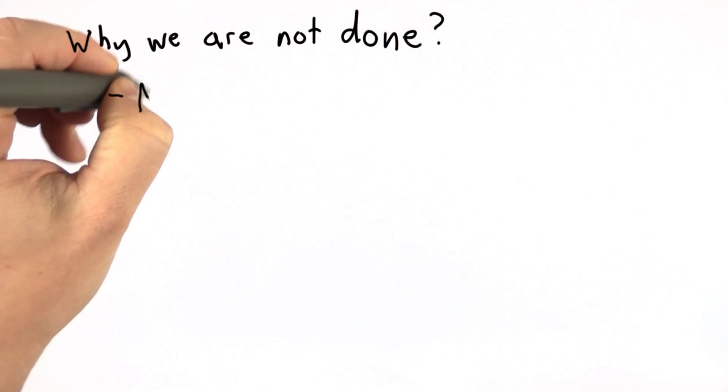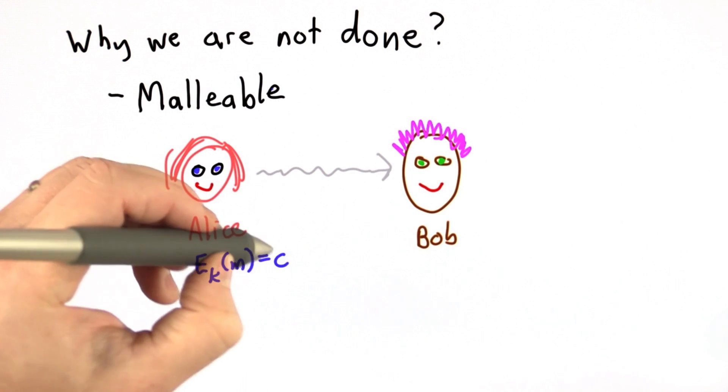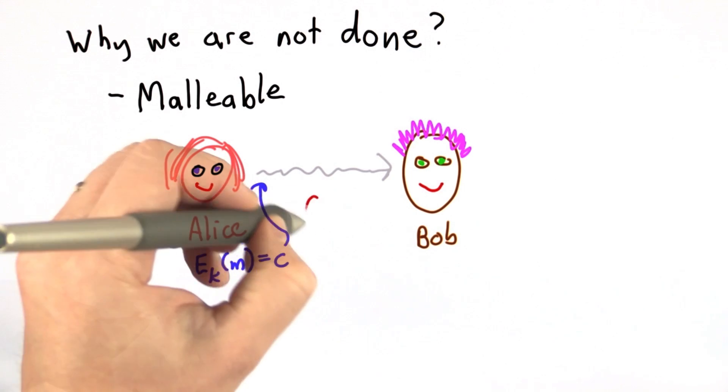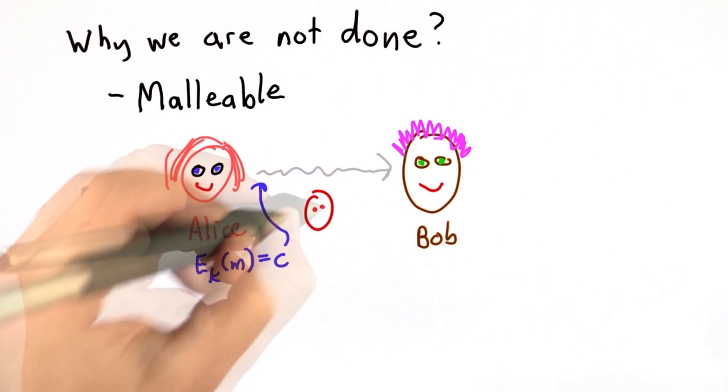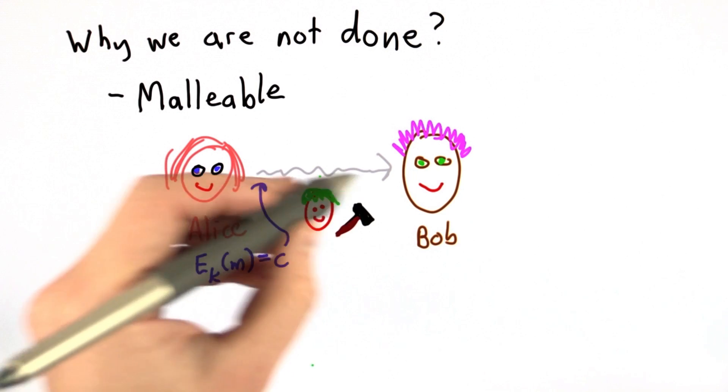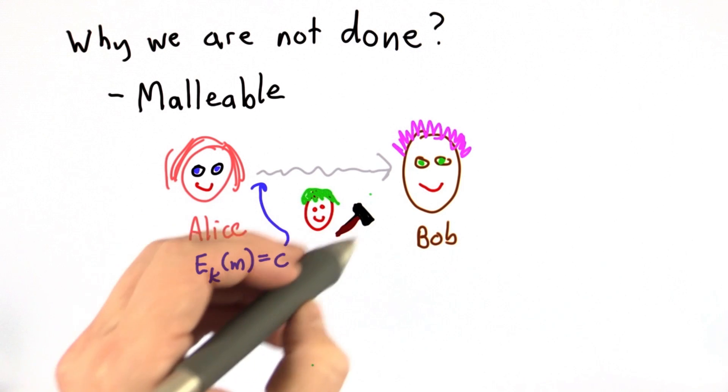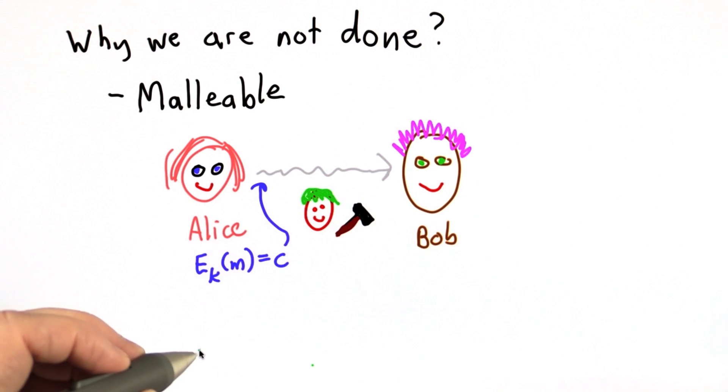One problem is that it's malleable. So what malleable means is if Alice sends her ciphertext to Bob, and our evil interceptor, this time it's not just an eavesdropper, it's an eavesdropper with a hammer. If our interceptor has control over the network, and instead of just being an eavesdropper, can be an active attacker.